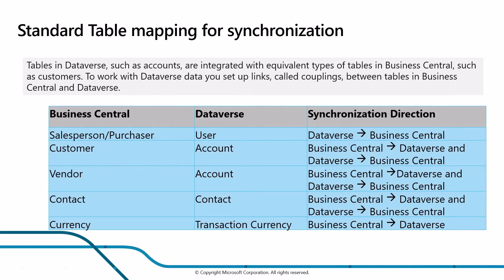For standard table mapping for synchronization, tables in Dataverse such as accounts are integrated with equivalent types of tables in Business Central. For each table in Business Central, there is an equivalent in Dataverse so they speak the same language. For example, in Dataverse it's called 'accounts' while in Business Central it's called 'customers.' To work with Dataverse data, you set up links called coupling between tables in both systems.